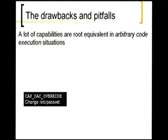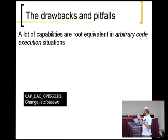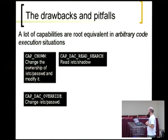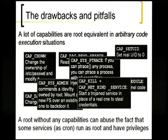In some scenarios, certain capabilities can be root-equivalent, especially where arbitrary code execution is possible. For example, if you have the capability to override DAC checks, you can change /etc/passwd and get root easily. If you have the capability to change file permissions, you can change the owner of /etc/passwd. The same applies to /etc/shadow — you could run a rainbow attack and get root. And if you have CAP_KILL and CAP_NET_BIND_SERVICE together, you can kill a service and replace it to steal credentials.